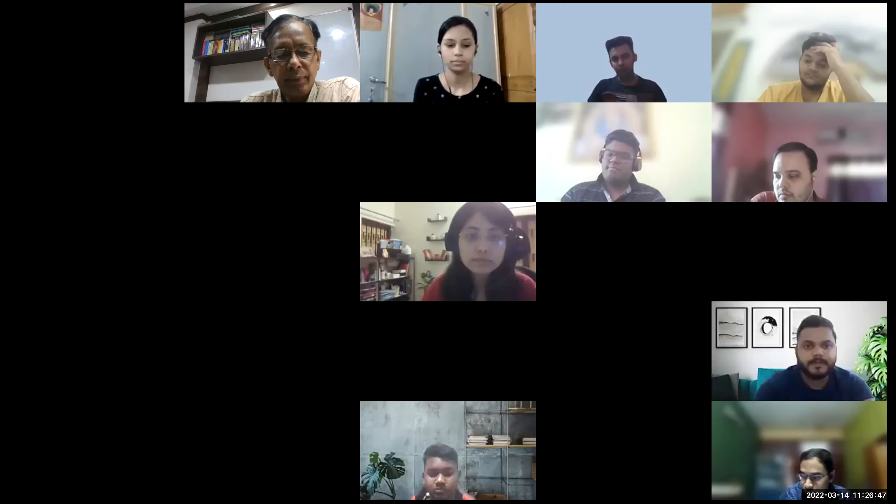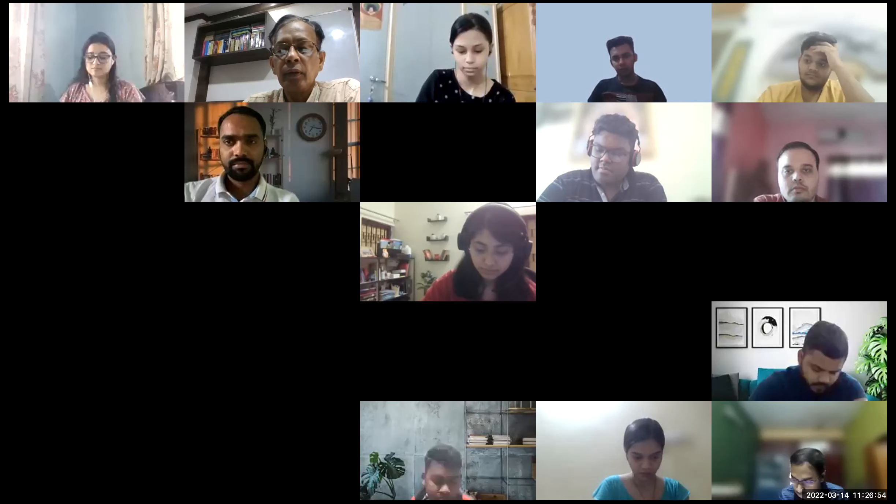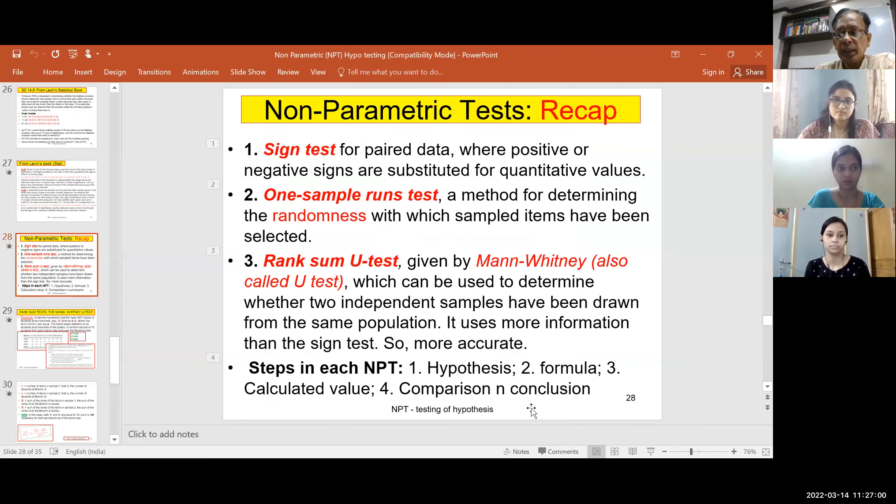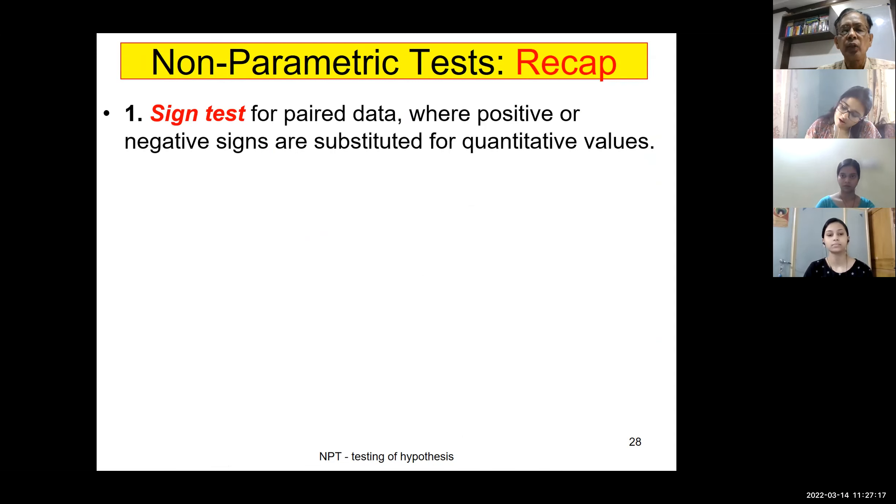We'll discuss a type of test in non-parametric tests, which is a rank sum test given by Mann-Whitney. I'll be sharing my screen. Hope my screen is visible. We'll start with a quick recap of what you have done. If you recall, first we discussed the sign test. It is applicable to compare two group paired data, and we used positive sign, negative sign by substituting the given quantitative values data points.